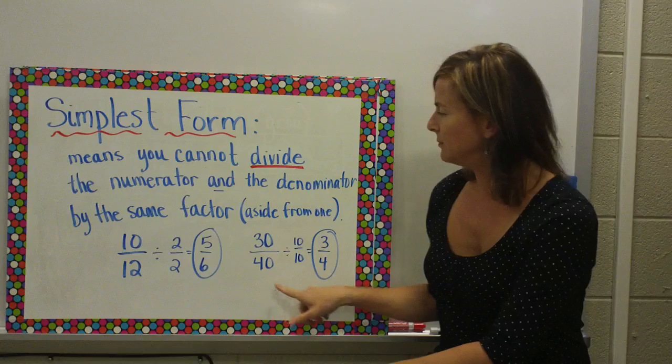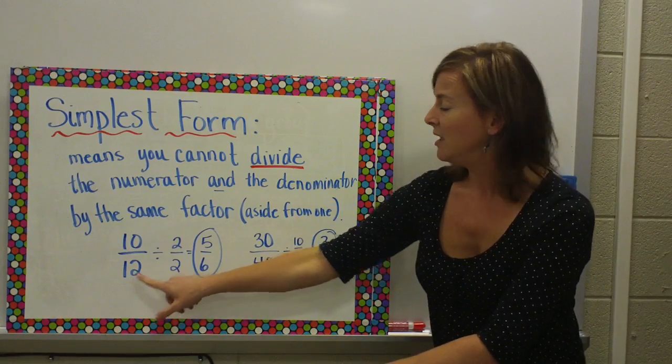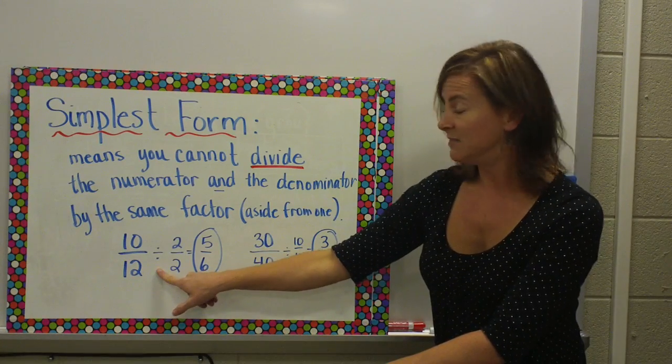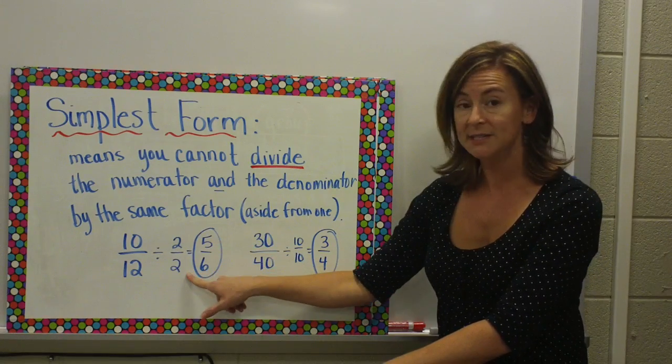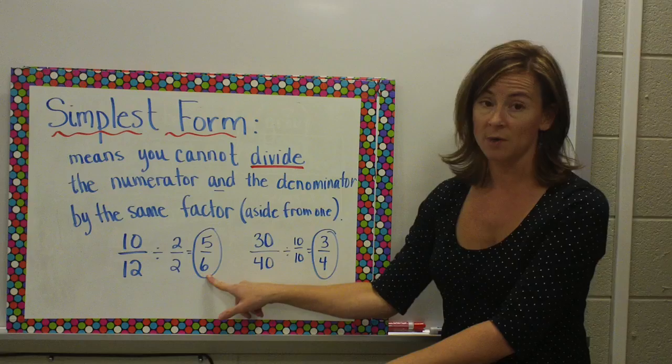I have a couple examples here. Ten over twelve. When I break that down and divide both the numerator and the denominator by the same number, in this case two, I get simplest form, five sixths.